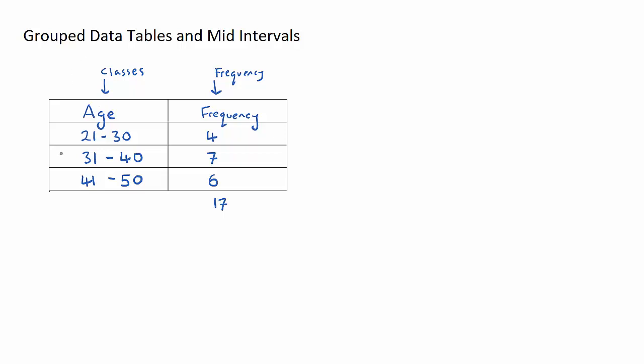That's basically the structure of a grouped data table. I now want to talk about the mid interval value. So I'm going to create a new column here called mid interval MI value. Now the mid interval is the midpoint in our class, and the reason that we do this is to estimate the average age.